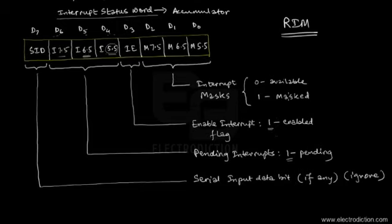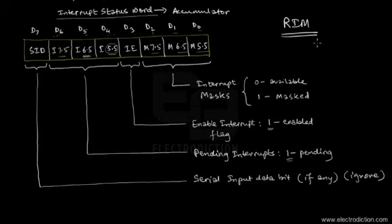Finally, bits D0, D1, and D2 correspond respectively to RST 5.5, 6.5, and 7.5. If these bits are found to be logic zero in the status word, the corresponding RST interrupts are available (unmasked); otherwise they are masked. This is how the RIM instruction is used to obtain the status of the interrupt pins.